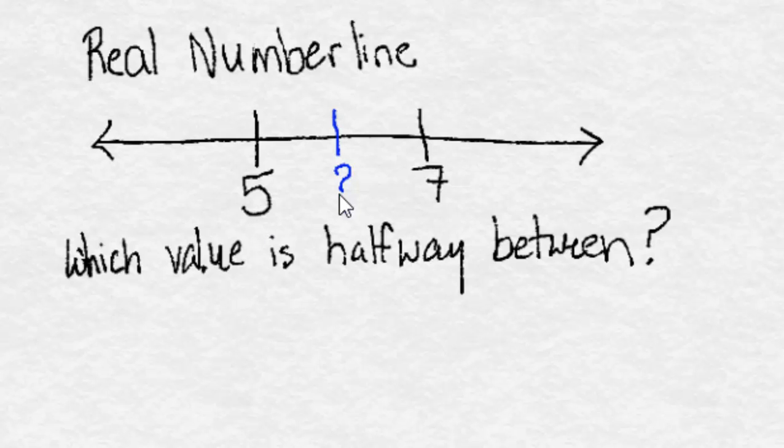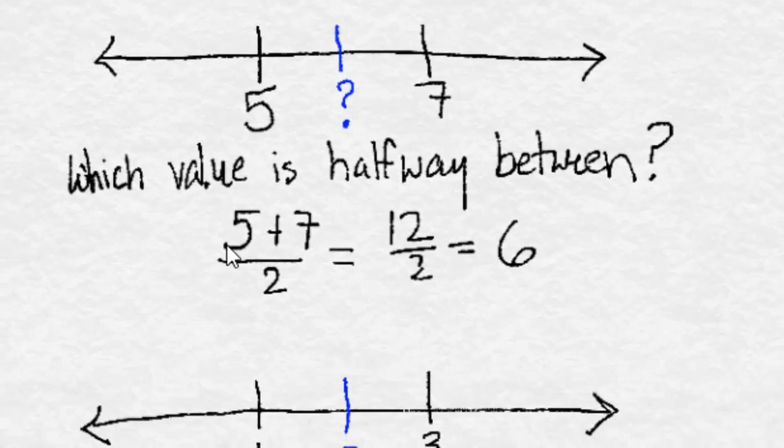Now you probably already know 6 is the number between 5 and 7, but let's just confirm that. If we add 5 plus 7 and divide by 2, we get 12 over 2, which is equal to 6 as we expect.